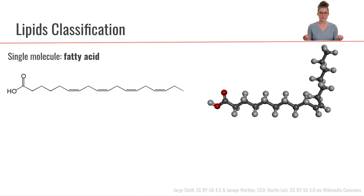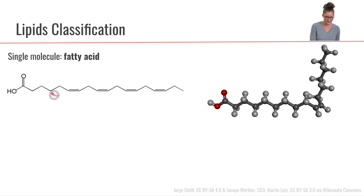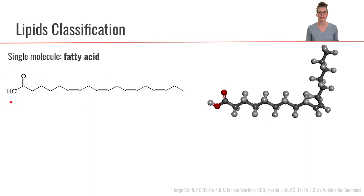Now let's talk about the actual structure of our lipids. We're going to start with single molecules. The most basic structure in lipids is the fatty acid, and we see one example over here. The characteristics of a fatty acid are that it has a hydrocarbon tail — made up of just carbons and hydrogens — and then on the end we have a carboxyl group, which is what makes it an acid. So we have this fatty hydrocarbon tail and a carboxyl group, making it a fatty acid.